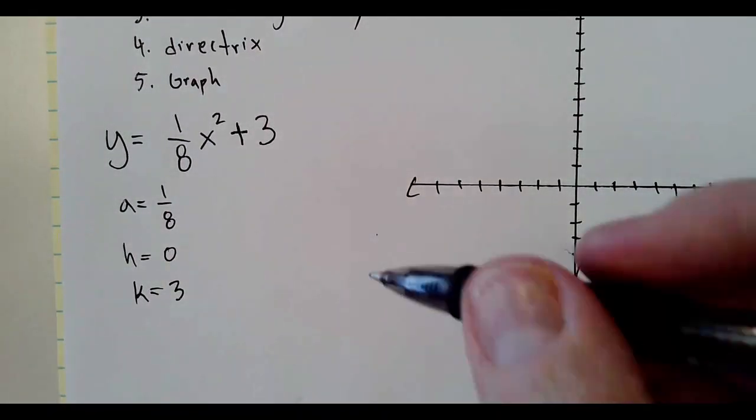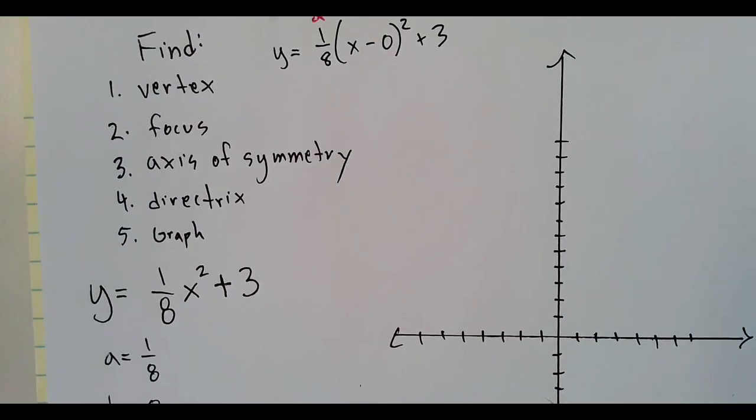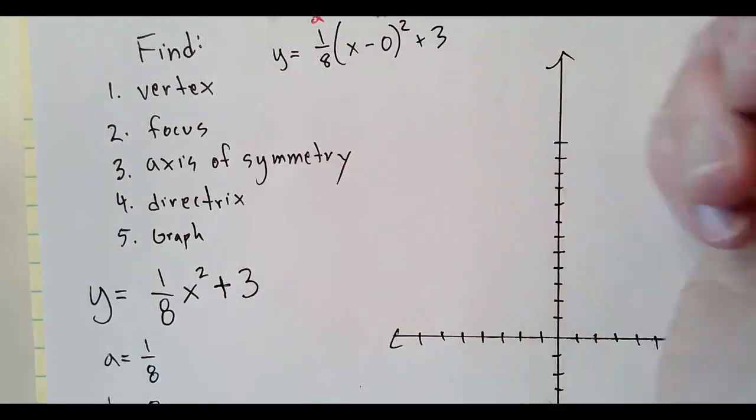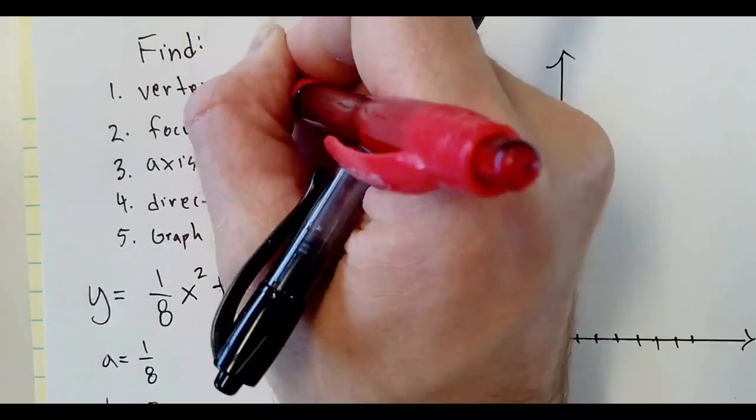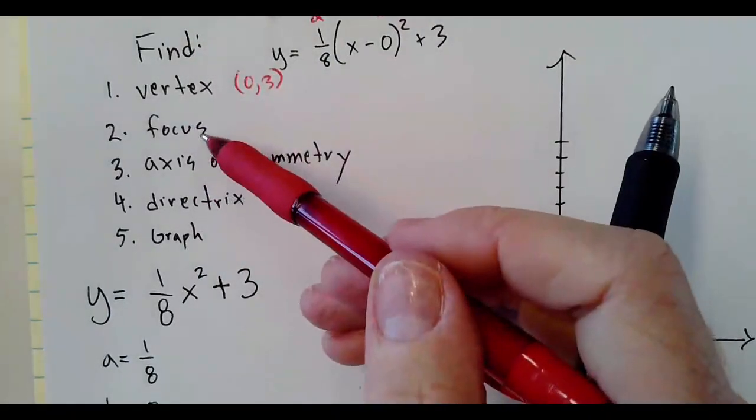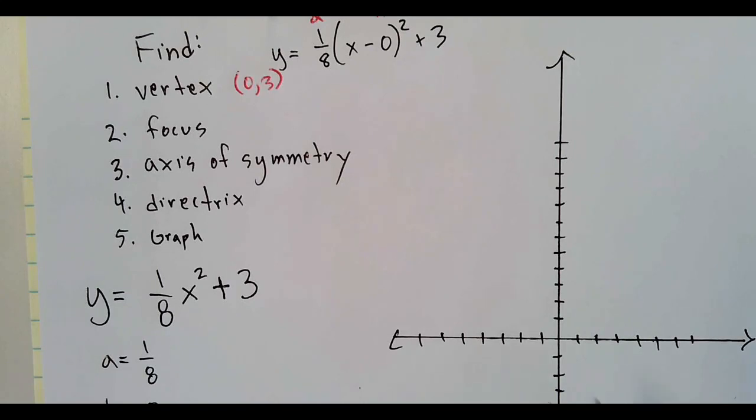We know that our vertex, the first question it asks for, is (h, k). So the vertex is (0, 3). The focus is going to be found using a equals one over four c. c is the distance from the vertex to the focus, and since a is positive, we know that it opens upward.